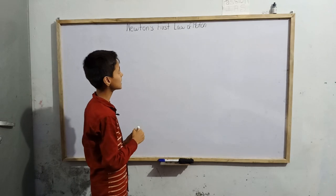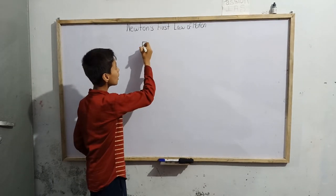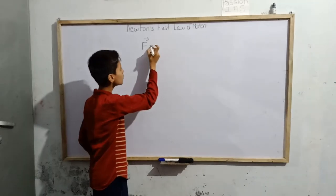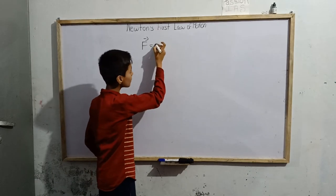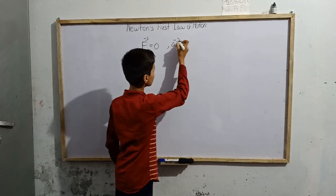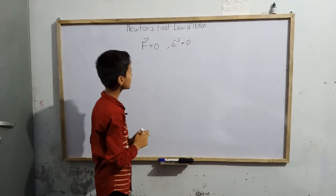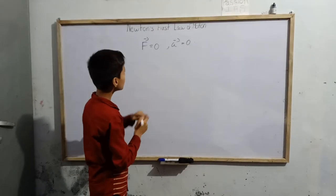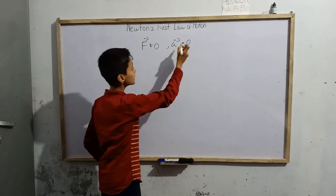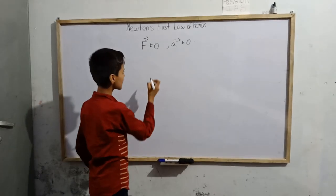The statement is: if the sum of all forces acting on any particle is zero, then the acceleration A of that particle is also zero. Conversely, if the sum of all forces is not equal to zero, then the acceleration is also not equal to zero. Let us take one example.